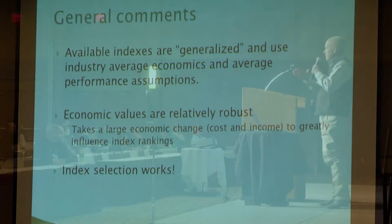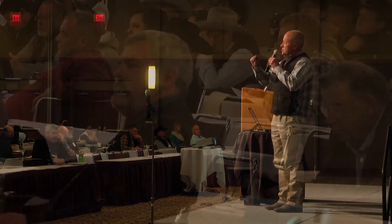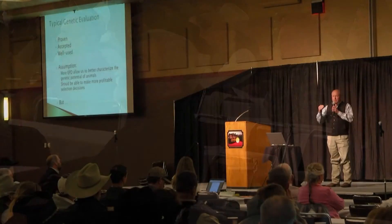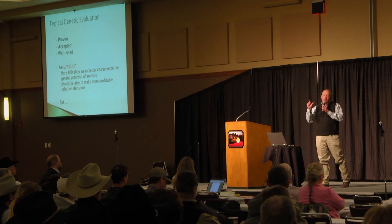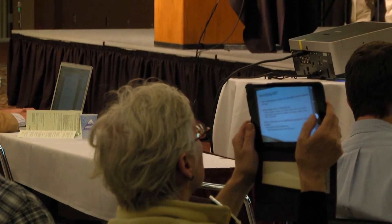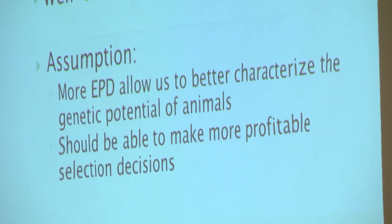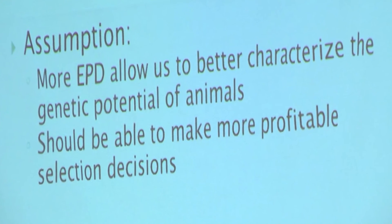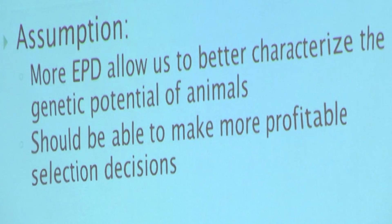Some of these indexes lack traits that might be important to your operation. A weaning index, for instance, may not include cow fertility measures, but if that's important to your operation you need to also look at the EPD associated with that and select on it in addition to the index. So if an index is lacking in traits that are economically relevant in your operation, you need to look at the EPD for those traits and include that in making your selection decisions.